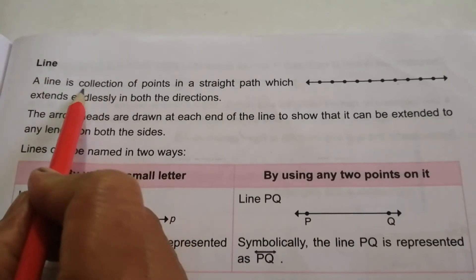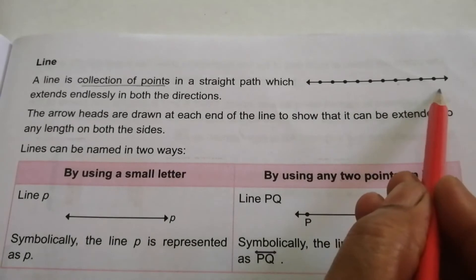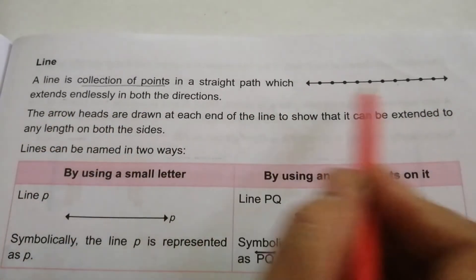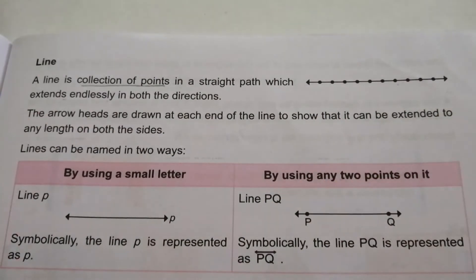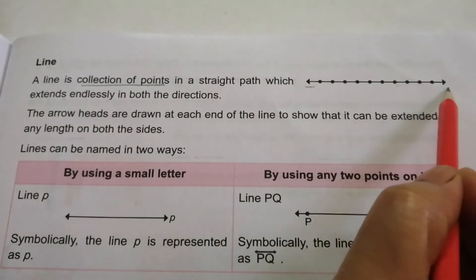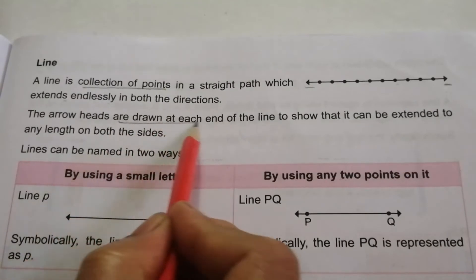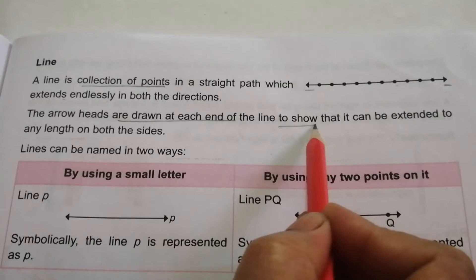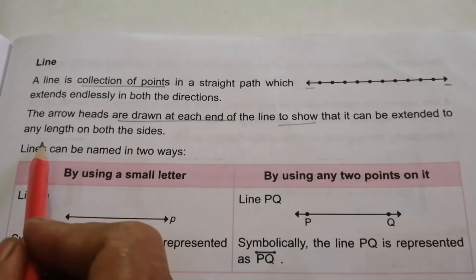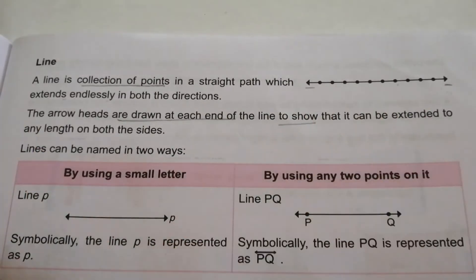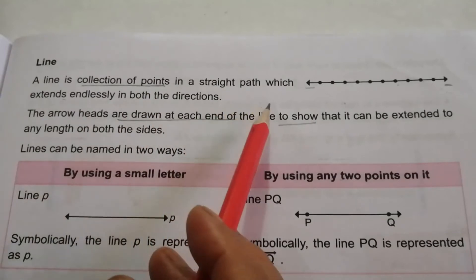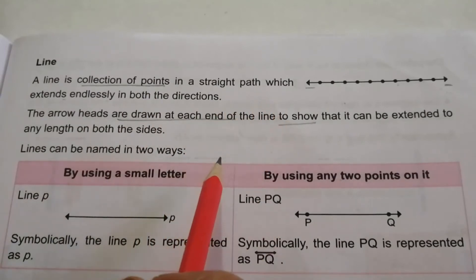Next is a line. A line is a collection of points in a straight path which extends endlessly in both directions. Arrowheads are drawn at each end of the line to show that it can be extended to any length on both sides — meaning a line does not have any fixed length.